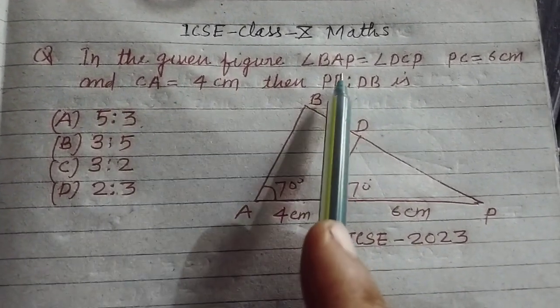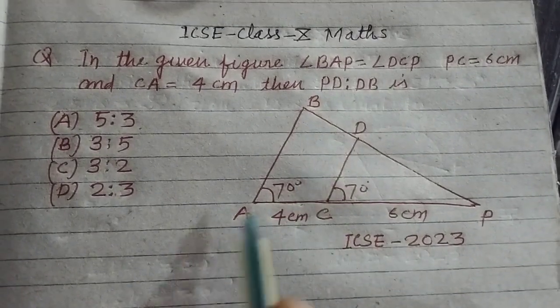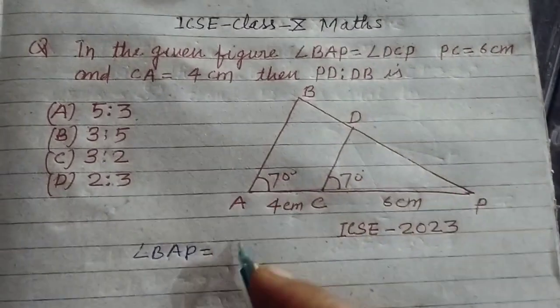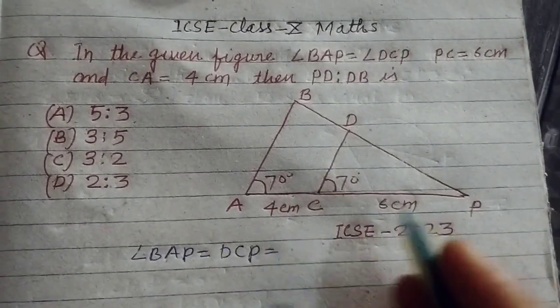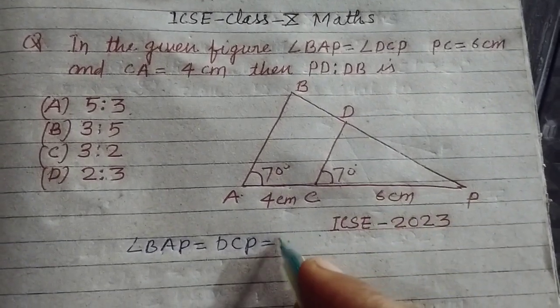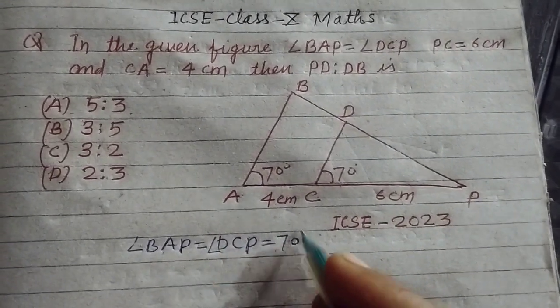In the given figure, angle BAP is equal to angle DCP. BAP equal to DCP, this is given as 70 degrees.